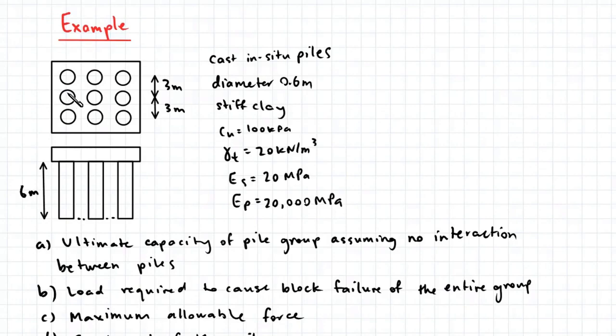Here we have a group of nine piles with a spacing of three meters between each pile from center to center. These piles are cast in situ and the diameter of each pile is 0.6 meters.